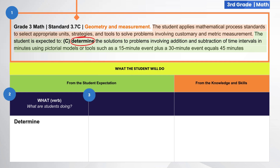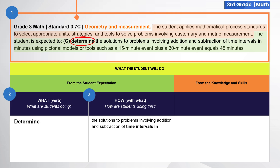The third step is to determine the how. For this step, refer back to the student expectation and ask: how are students doing this? Consider how students will determine, and in doing so, with what concept and or skill will students engage to demonstrate their learning. For this standard, the student expectation indicates that students will determine the solutions to problems involving addition and subtraction of time intervals in minutes using pictorial models or tools, such as a 15-minute event plus a 30-minute event equals 45 minutes.